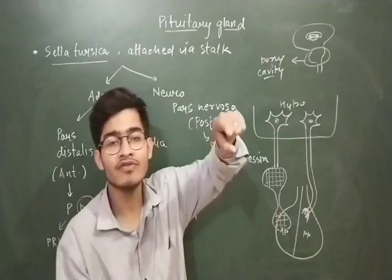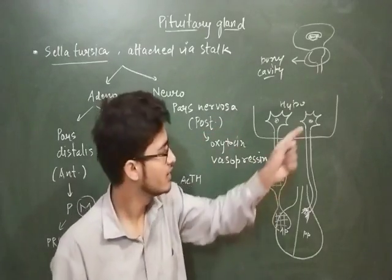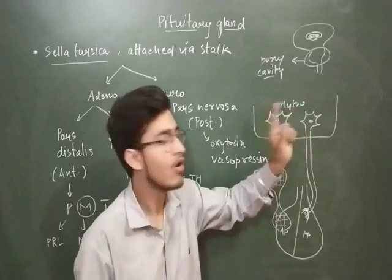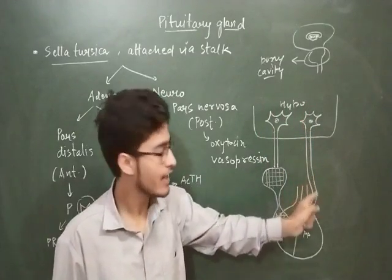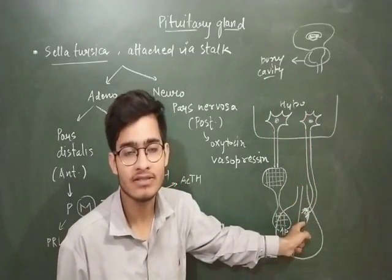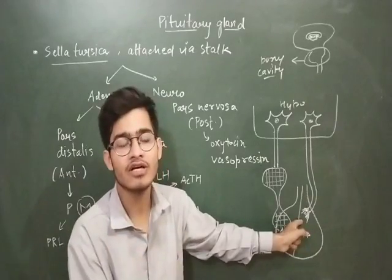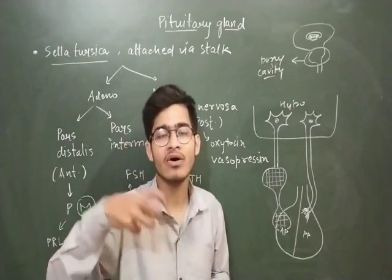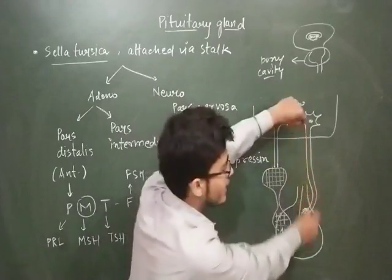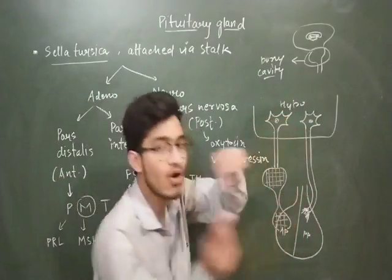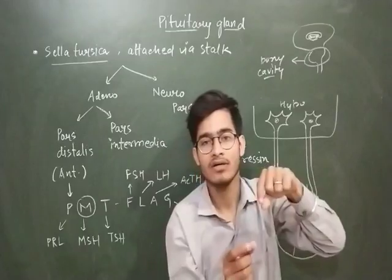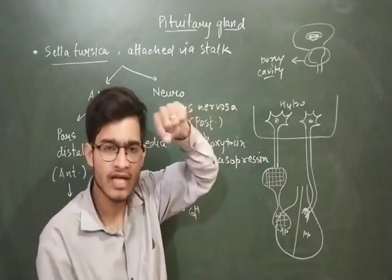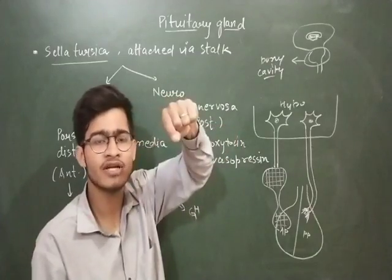The posterior pituitary is directly connected to the hypothalamus via neurosecretory neurons. The hormone travels from the axonal region to the nerve endings, which are embedded in the posterior pituitary — so there is a direct connection between the hypothalamus and the posterior pituitary with no gap in between.